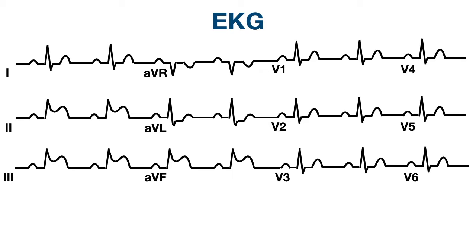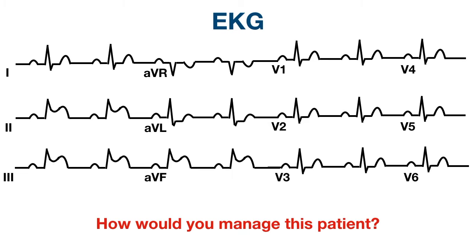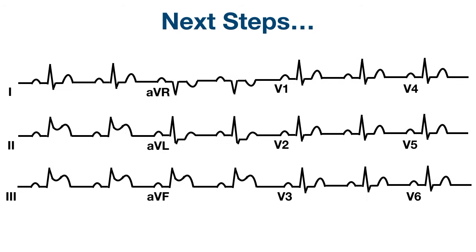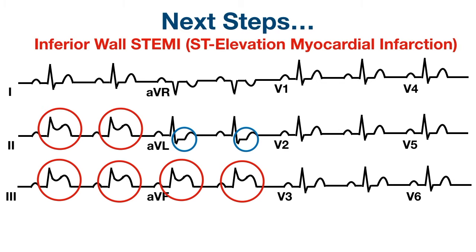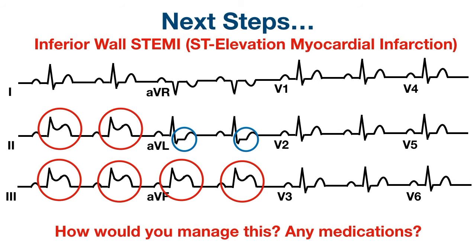As you finish putting in orders and are considering what medications to give the patient for his pain and symptoms, you're handed the EKG. Pause the video and think through how you would manage the patient and what you would do next. We can see we have ST elevations in leads 2, 3, and AVF, and reciprocal ST depressions in lead AVL. Leads 2, 3, and AVF are inferior leads, so this EKG is concerning for an acute inferior myocardial infarction.